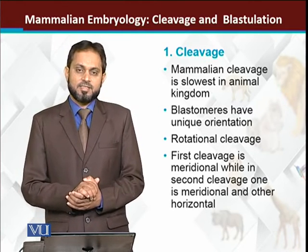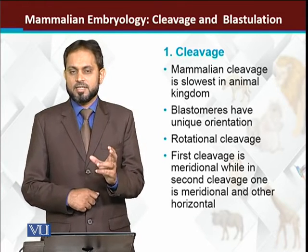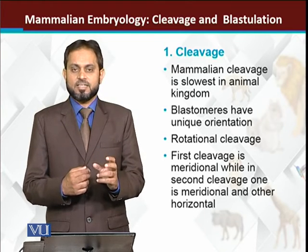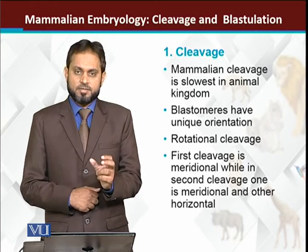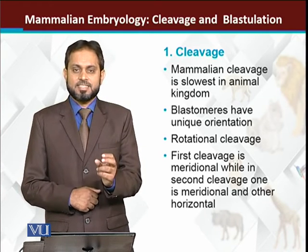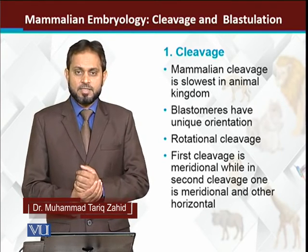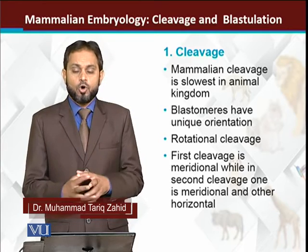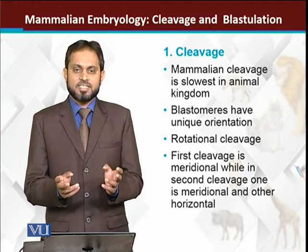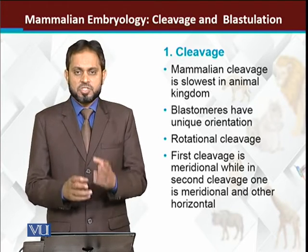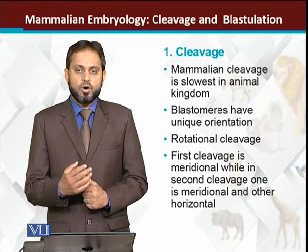Starting from the fertilized egg of mammals — specifically placental mammals — the egg of placental mammals is the smallest. Yolk is not found in placental mammal eggs, so the cell divisions are holoblastic, meaning the cell divides completely. All cell divisions in mammals are holoblastic cleavage.